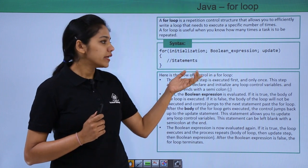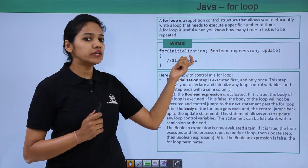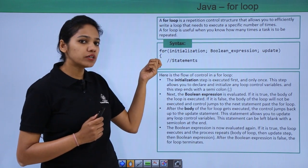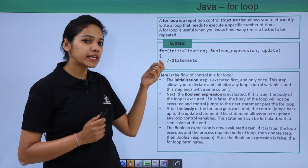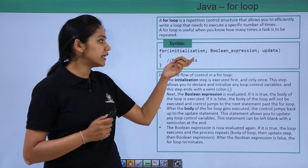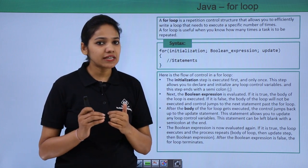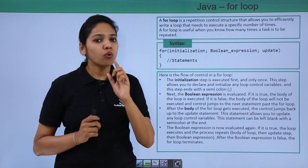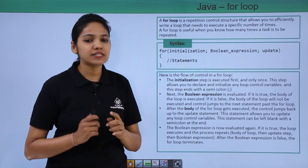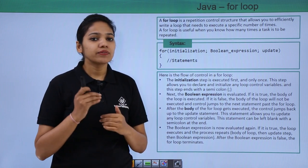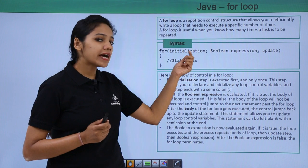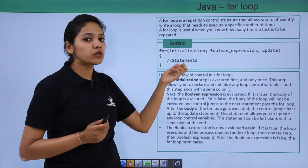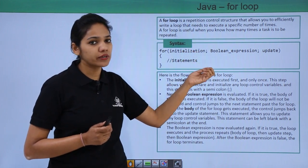In the case of the for loop, we need to understand three elements. We write the syntax with the for keyword — where 'f' is lowercase — then in the brackets, first you initialize the value. The variable that you initialize here is only initialized once. You cannot initialize it again and again, meaning you cannot change the value of that particular variable after initialization. For example, you set a variable like int i equals some value.